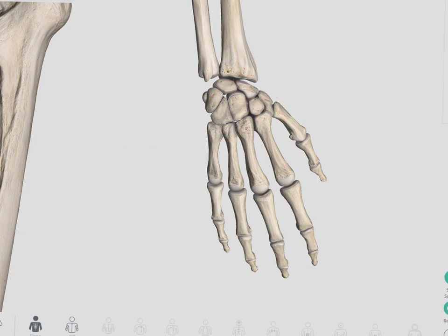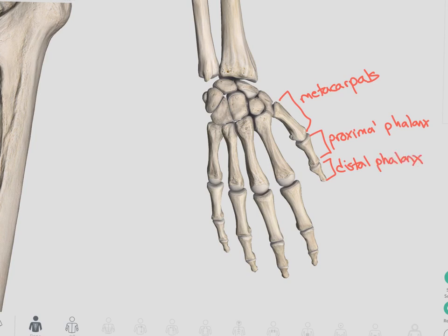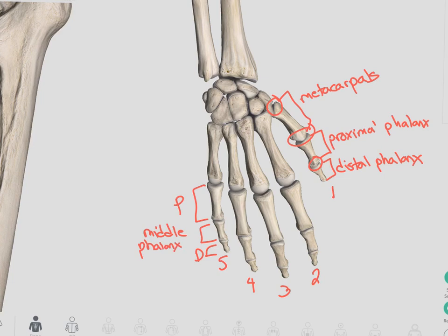Looking at the bones of the fingers, we have our metacarpals. In the thumb, we have our proximal phalanx and our distal phalanx, with an interphalangeal joint, as well as a metacarpal phalangeal joint and a carpometacarpal joint. We number the thumb number one, moving across the hand. In the fingers, we have three phalanges — we still have our proximal and our distal like we saw in the thumb, and we add a middle phalanx. Here we have a distal interphalangeal joint, proximal interphalangeal joint, metacarpal phalangeal joint, and a carpometacarpal joint. The joint between our radius and our carpals is called our radiocarpal joint.